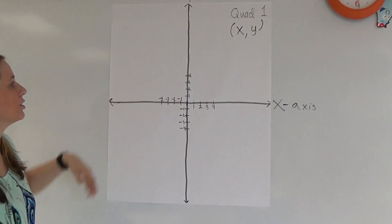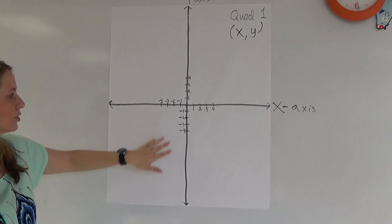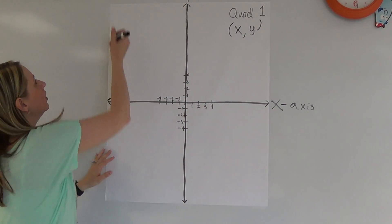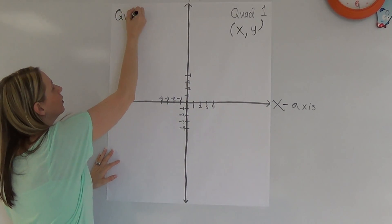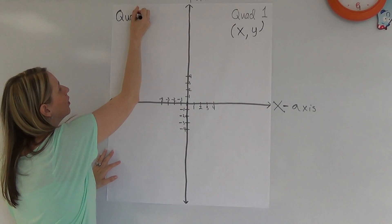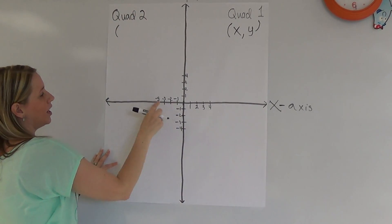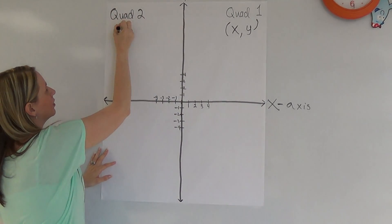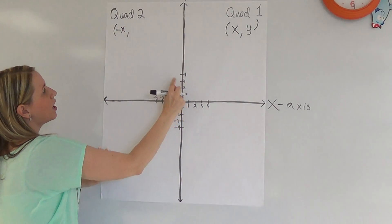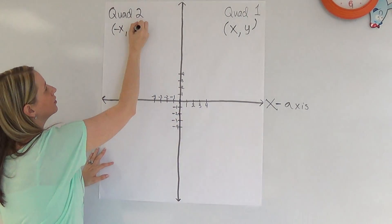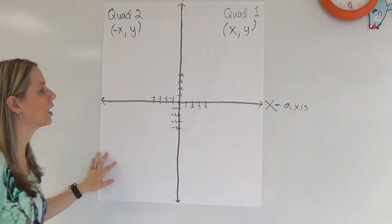And we have quadrant 2. As you can see, there are some negative numbers as well. So in quadrant 2, we have a negative x, but still a positive y.